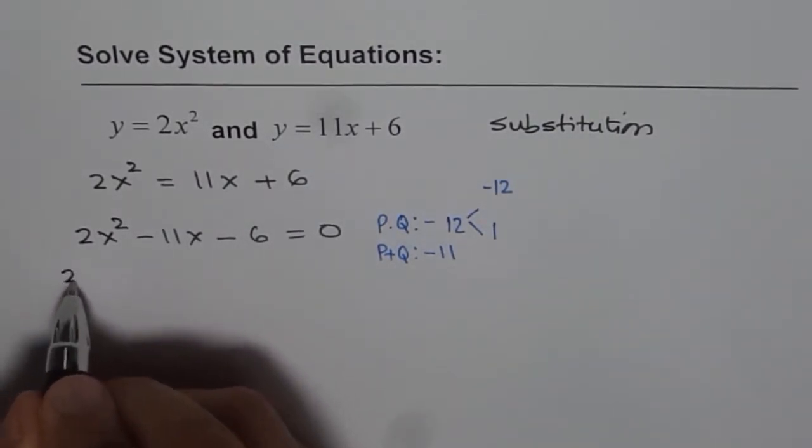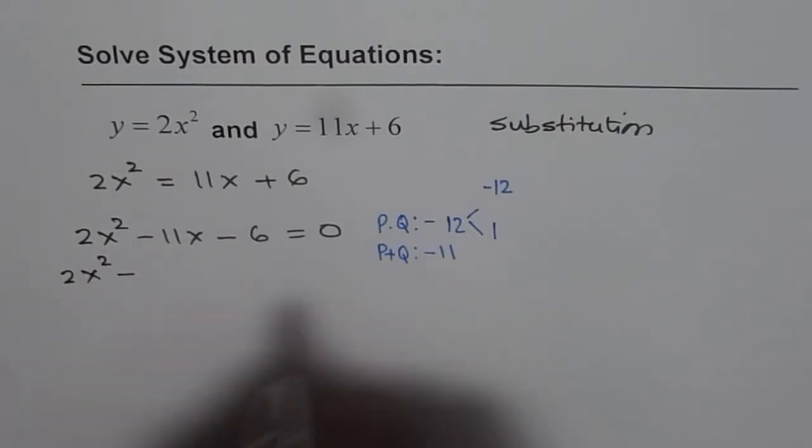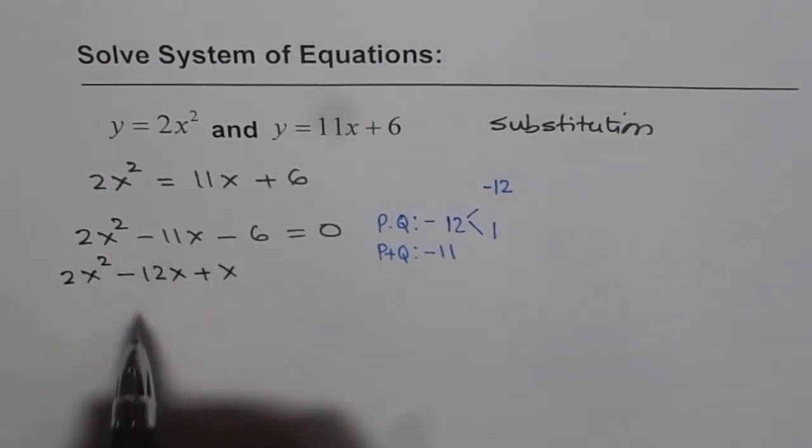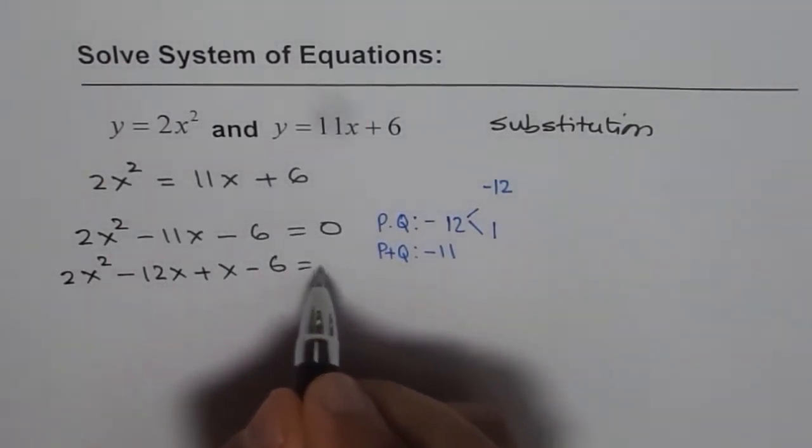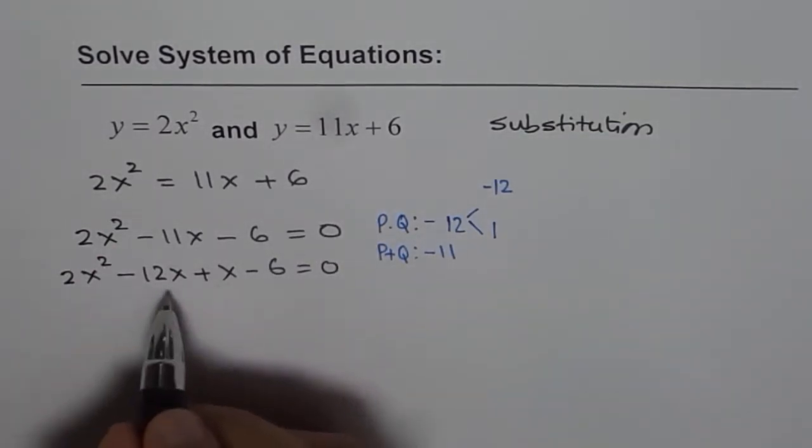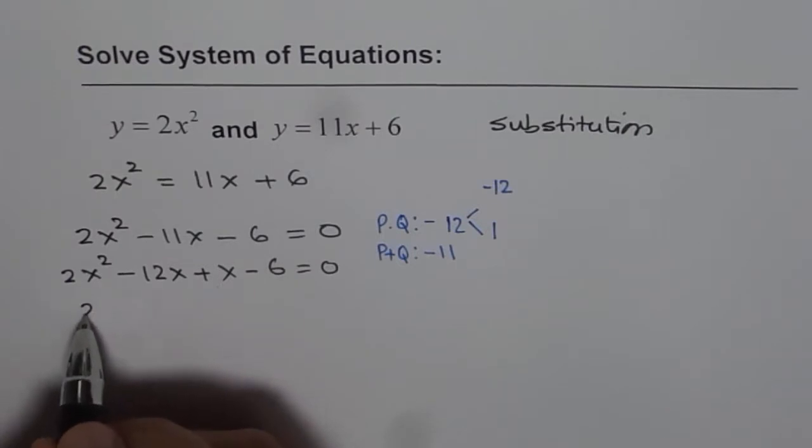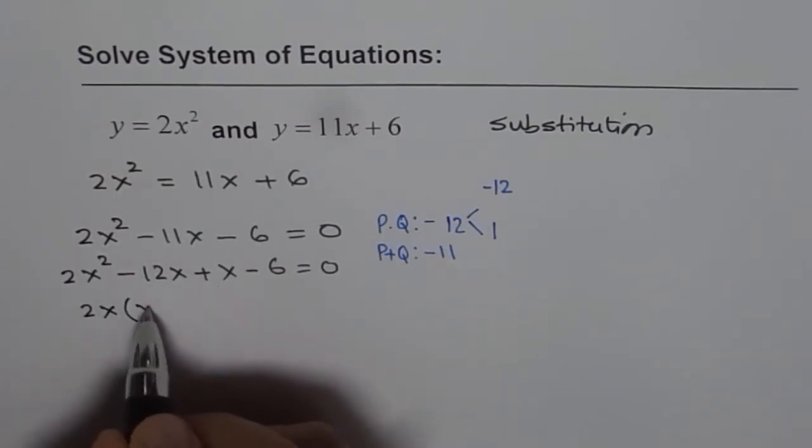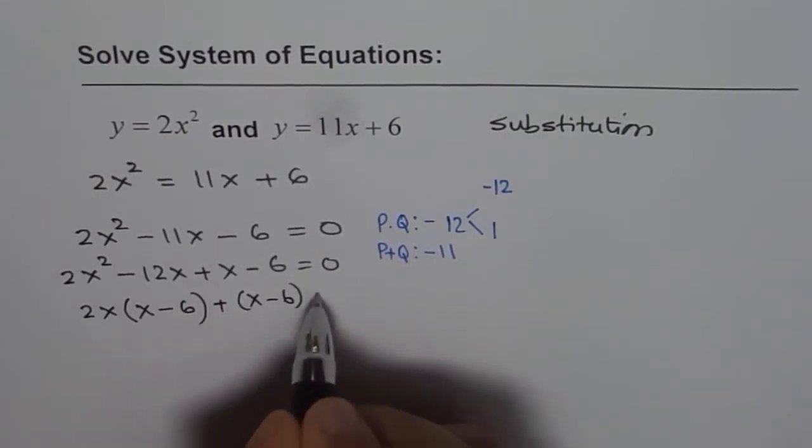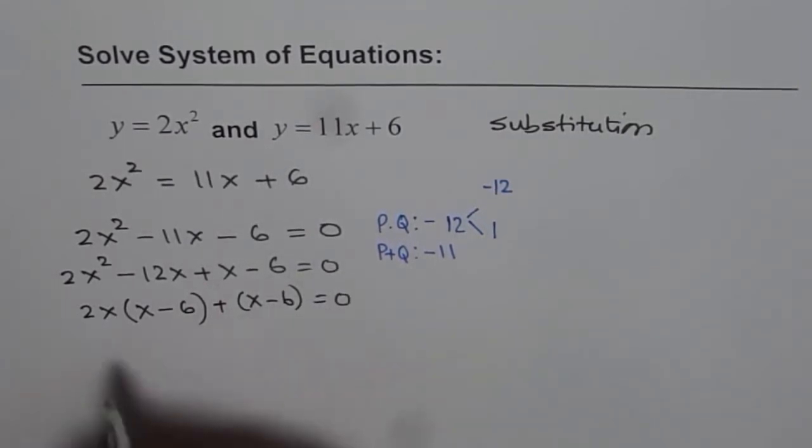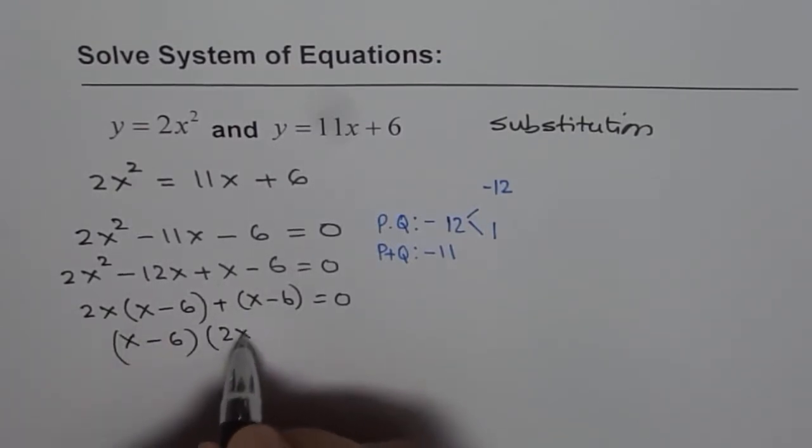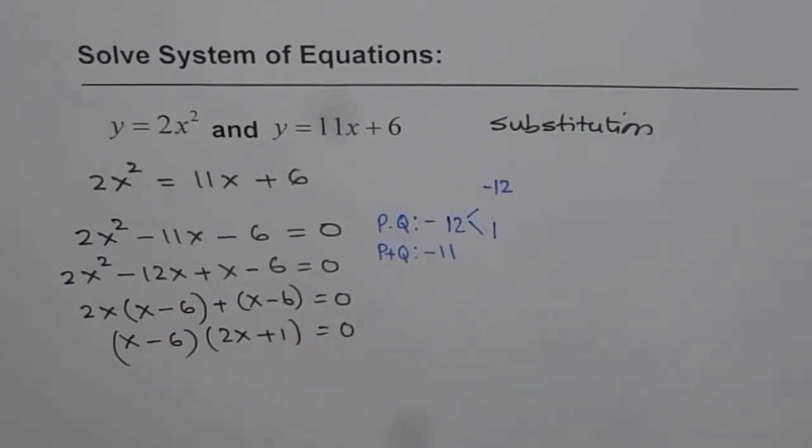So we can write this equation as 2x squared minus 12x plus x. So minus 11x is minus 12x plus x minus 6 equals to 0. Now we can factor using the groups. So grouping first two terms we can take 2x minus 6 and here we have x minus 6 equals to 0. Now x minus 6 is a common factor between the two terms. We get 2x plus 1 equals to 0.